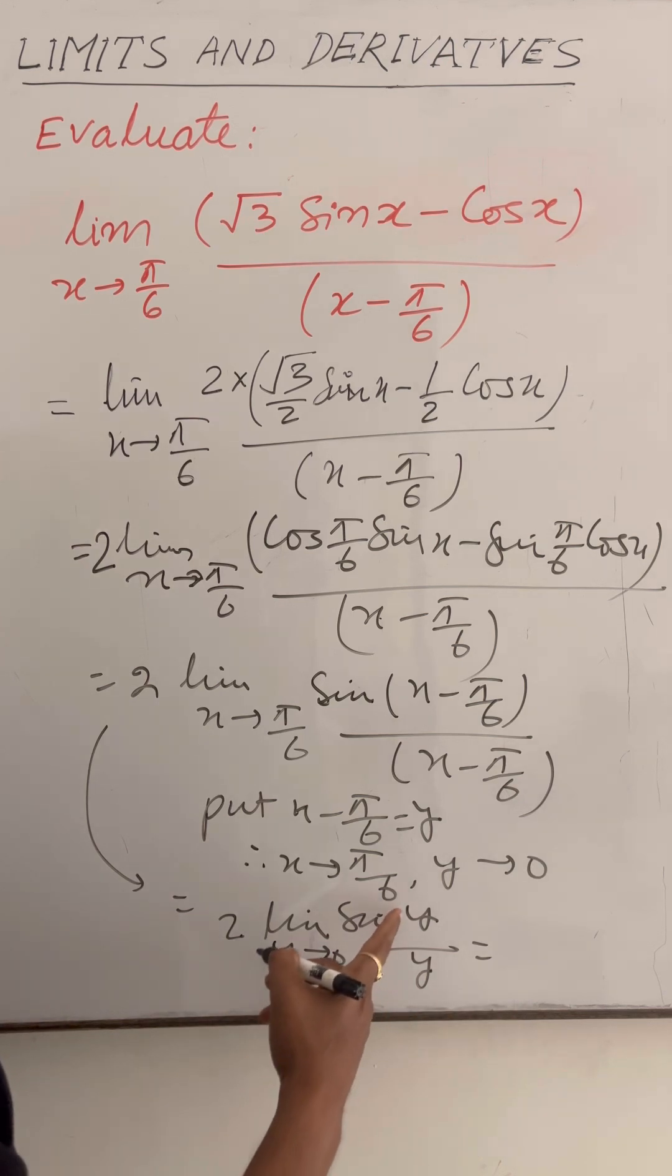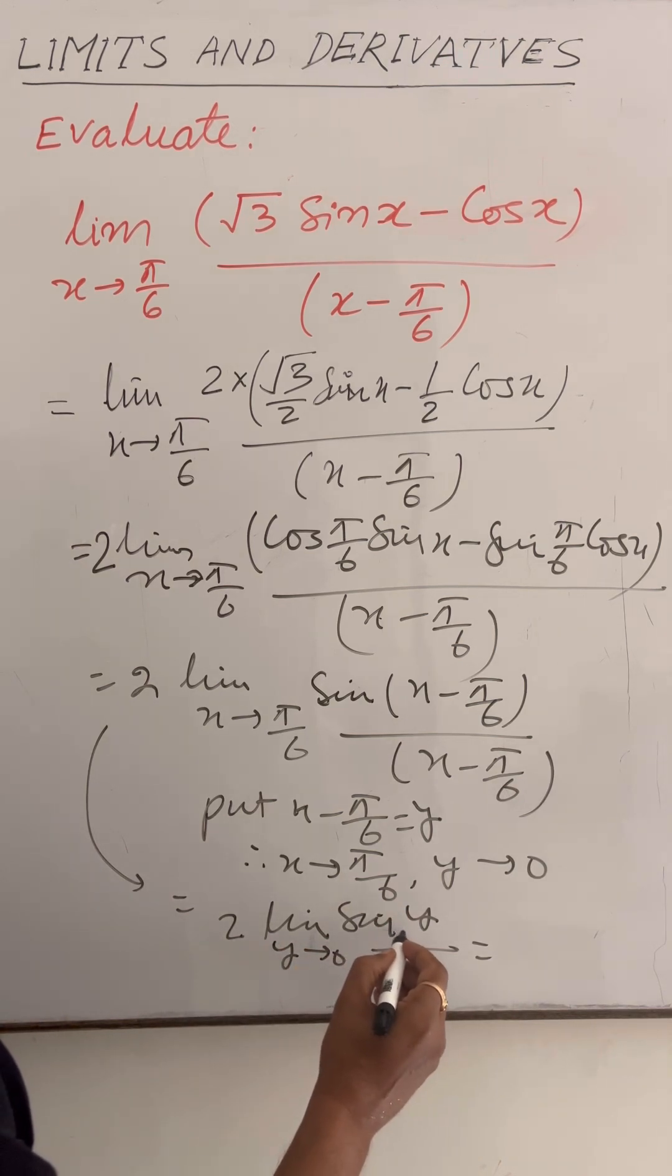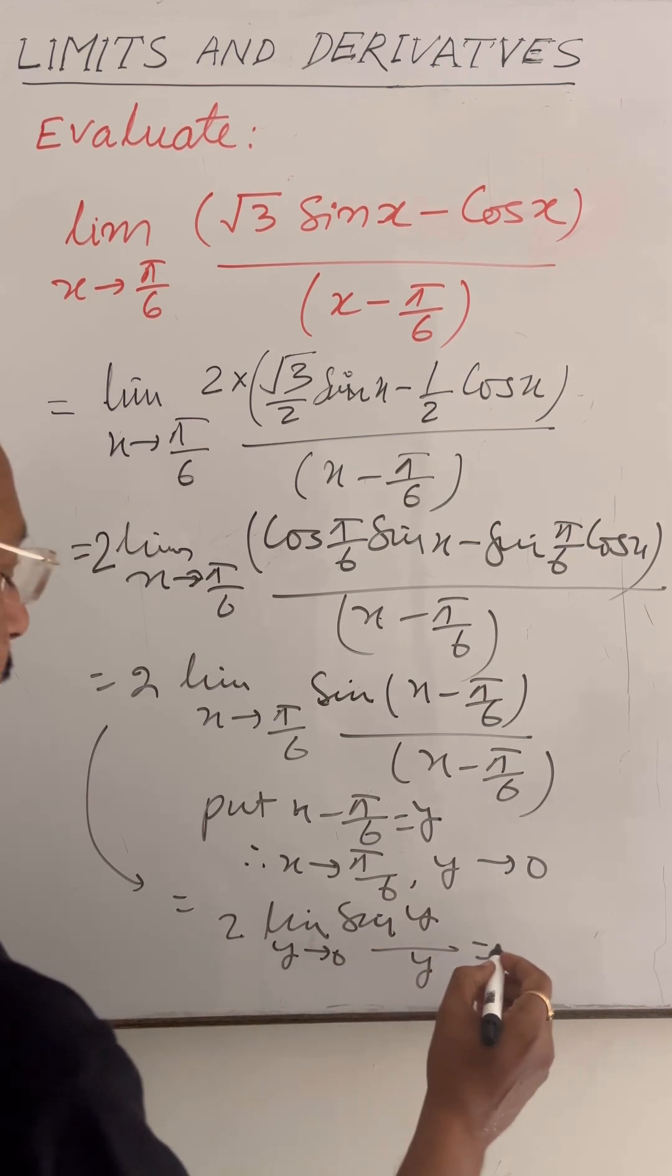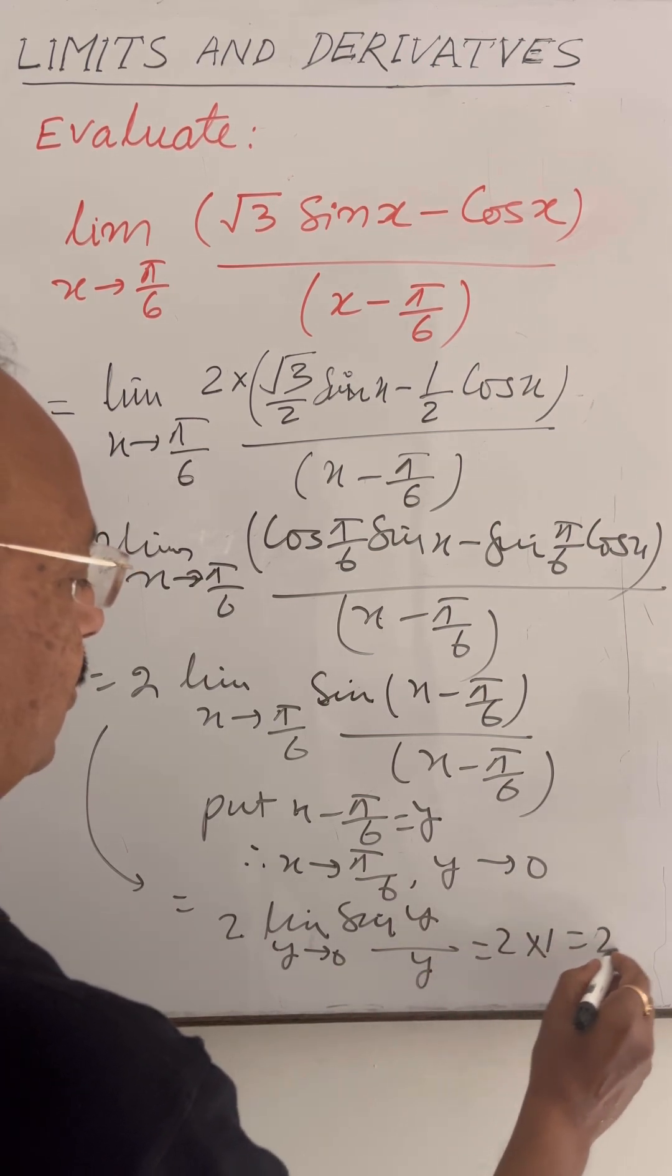And we know the formula sin θ by θ when limit θ tends to 0, this is equal to 1. So this is equal to 2 into 1 is equal to 2.